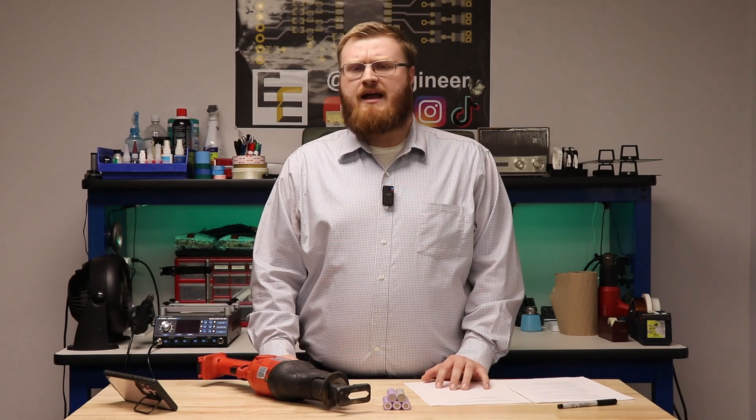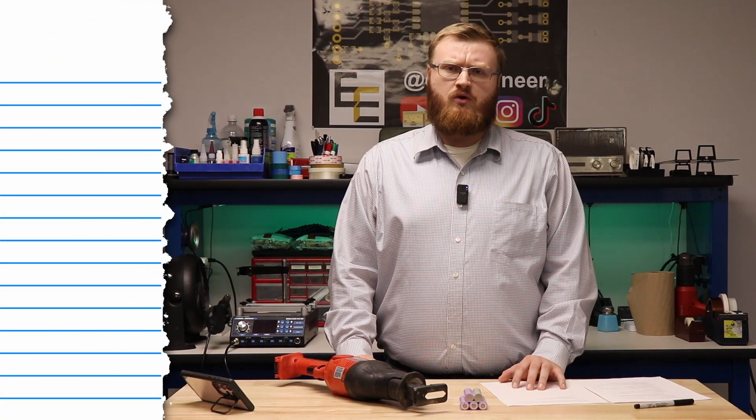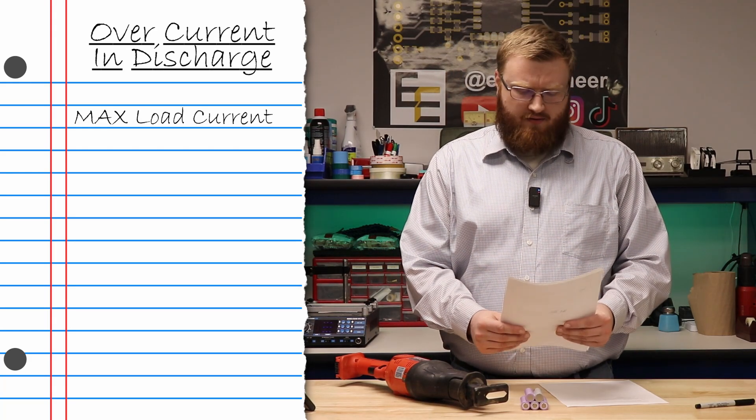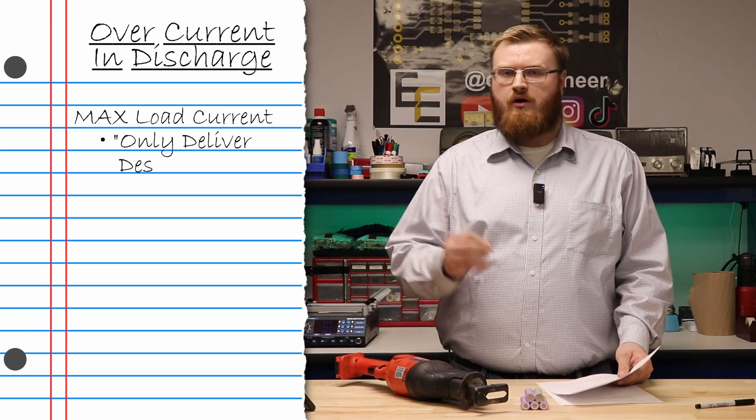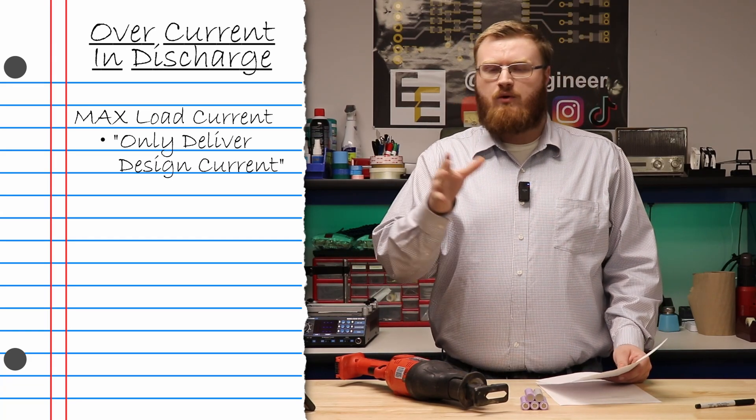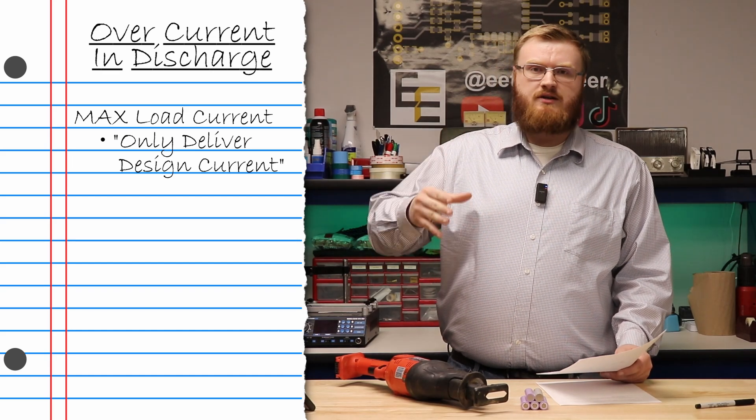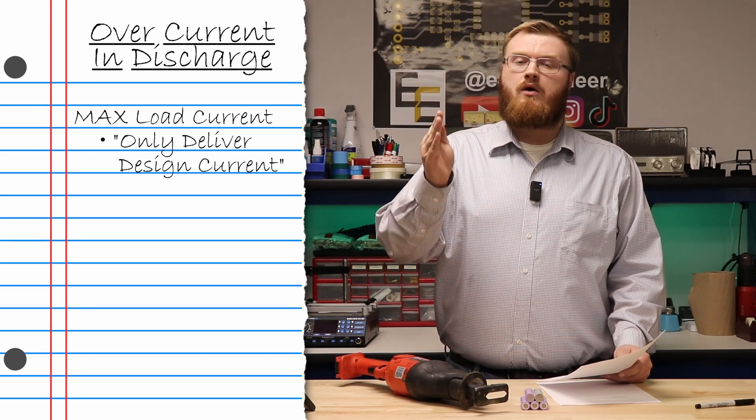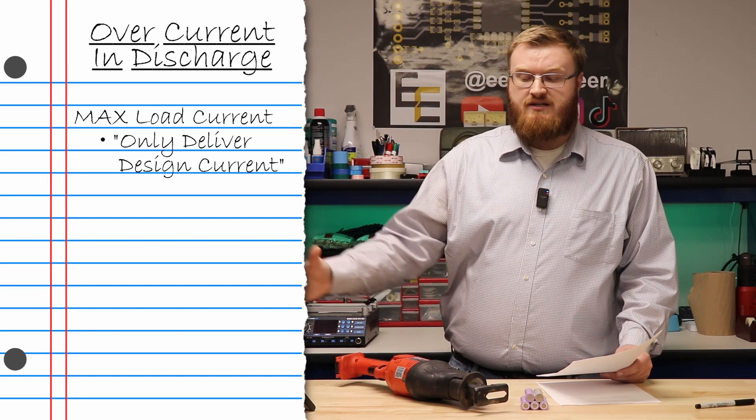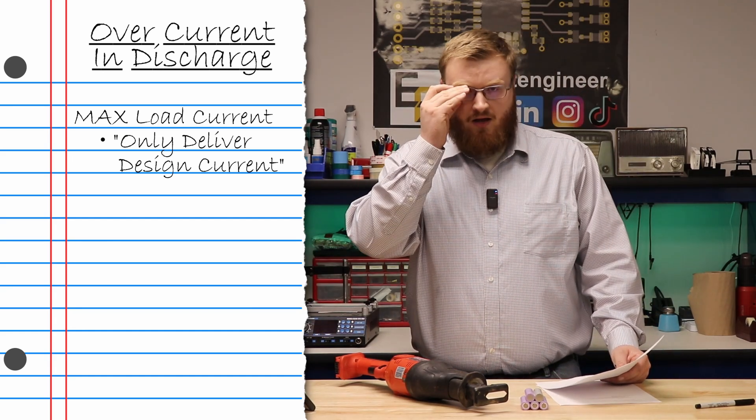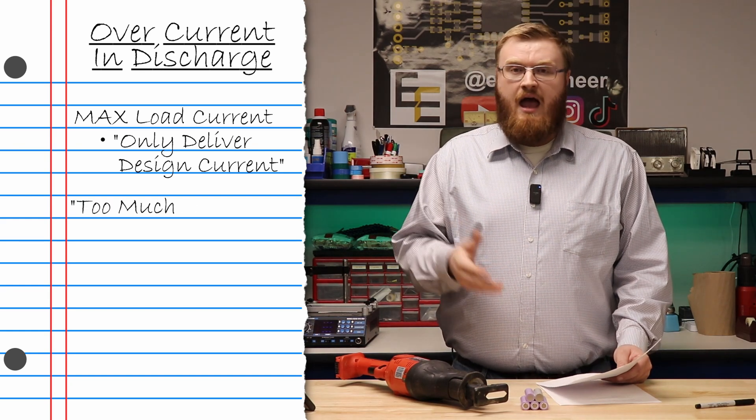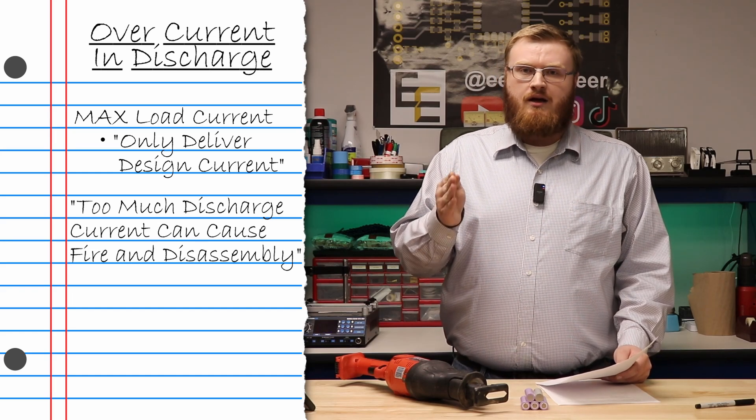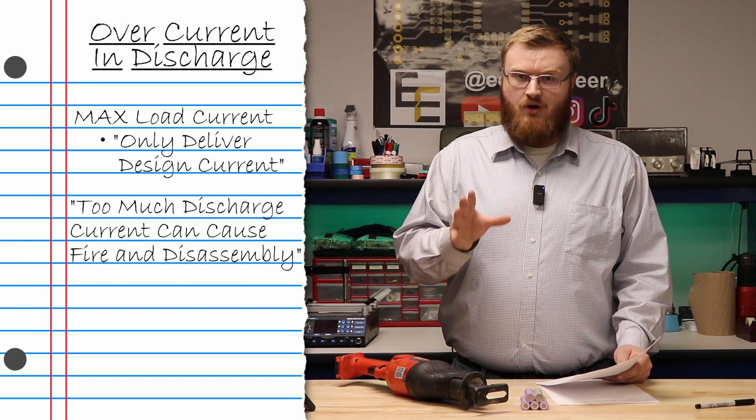The very first feature I always look at in a BMS chipset is OCD or overcurrent in discharge. This trip point setting is for the max load current of the battery pack. It ensures the battery pack can only deliver the current it was designed for. Let's say you designed the battery pack for 11 amps and set your OCD trip limit to 12 amps. If the load tries to draw 12 amps, the chipset will cut the output off and isolate the battery from the system. Too much discharge can cause overheating and fire and disassembly. You want to make sure your BMS has overcurrent in discharge.